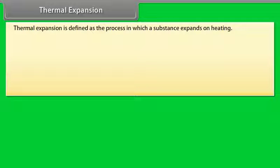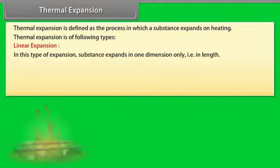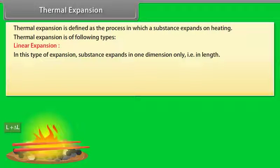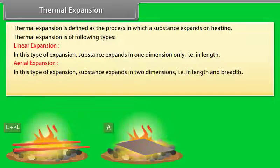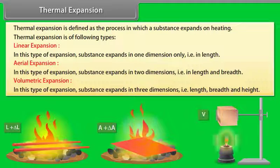Thermal expansion is defined as the process in which a substance expands on heating. Thermal expansion is of three types: (1) Linear expansion — the substance expands in one dimension only, that is in length; (2) Aerial expansion — the substance expands in two dimensions, that is in length and breadth; (3) Volumetric expansion — the substance expands in three dimensions, that is in length, breadth, and height.